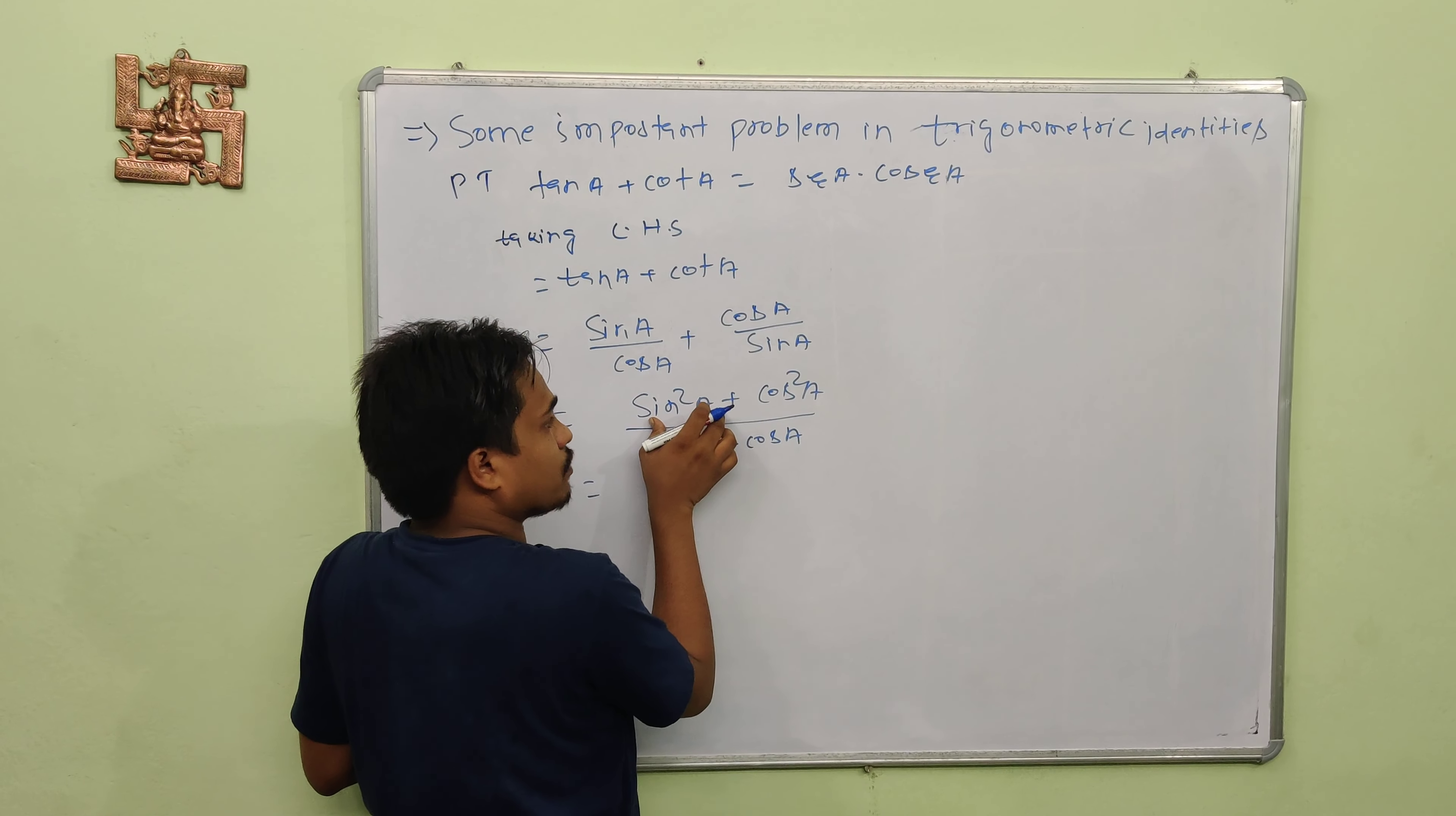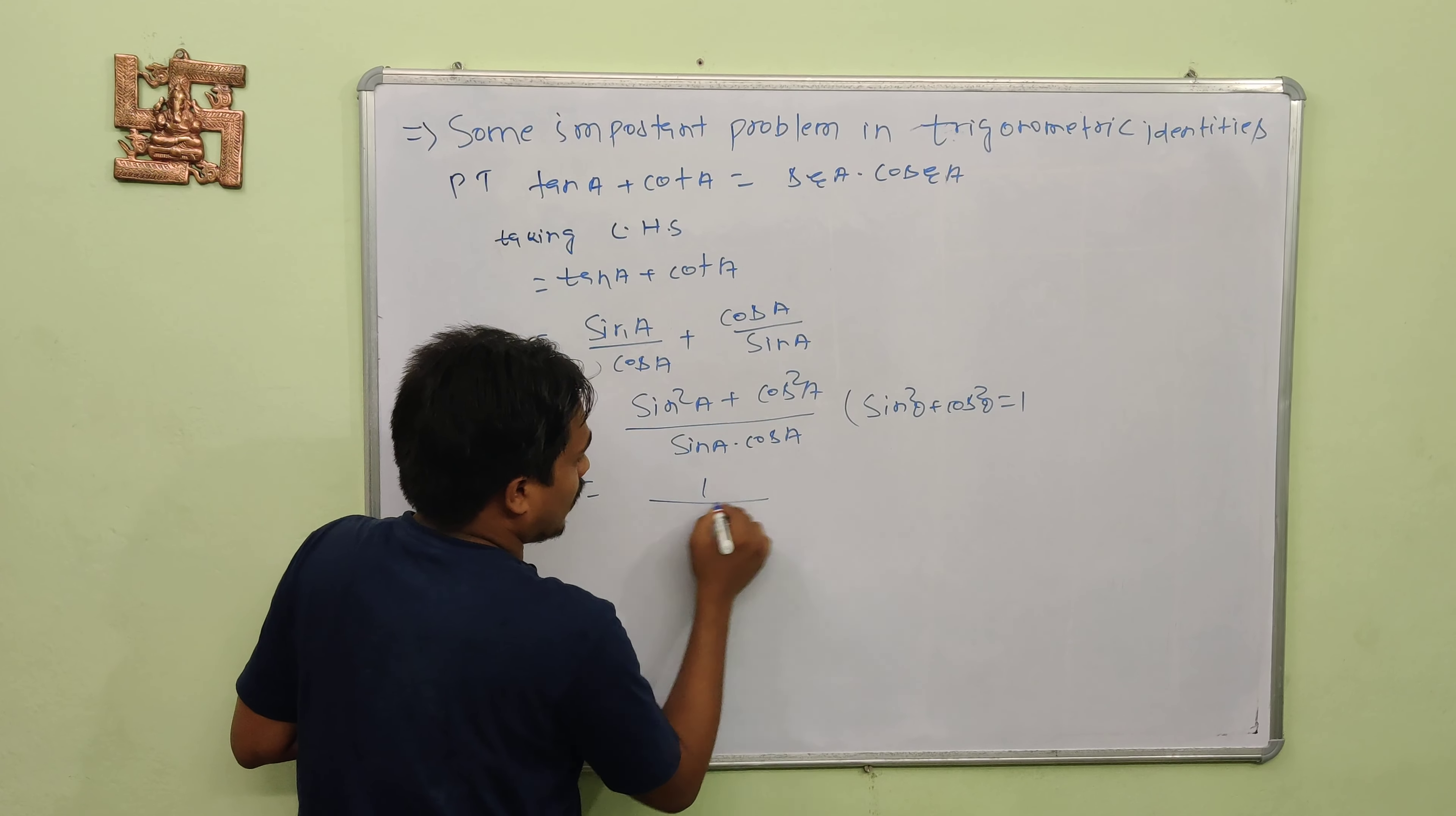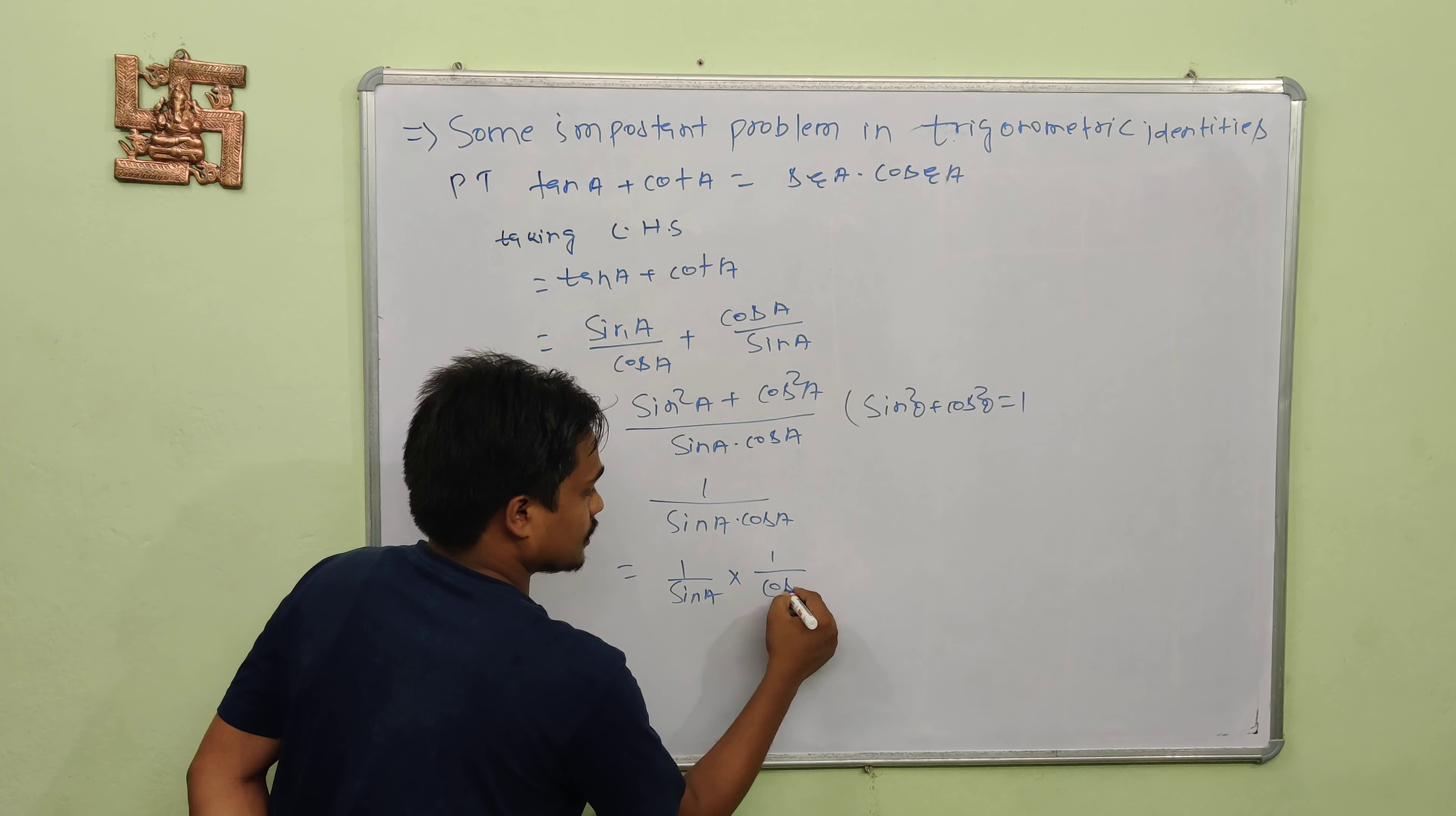Because we know that sin squared A plus cos squared A equals 1, we get 1 over sin A into cos A.